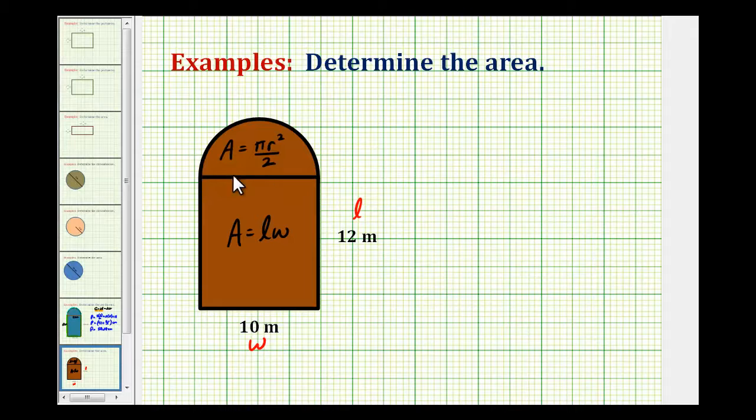And we know the length of this segment here is 10 meters, and the radius would be half of this length, half of the distance from here to here, which would be 5 meters.